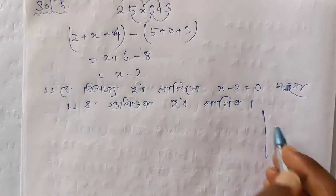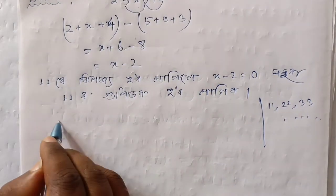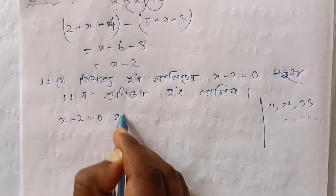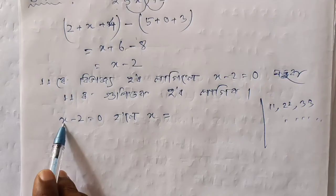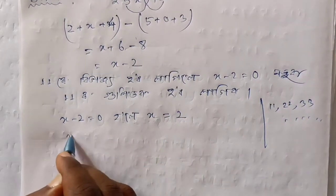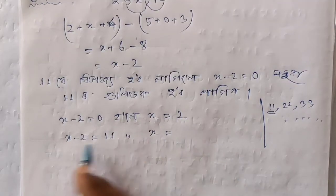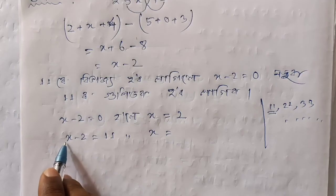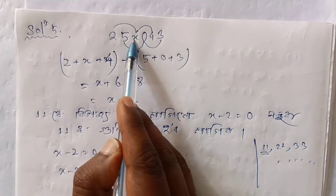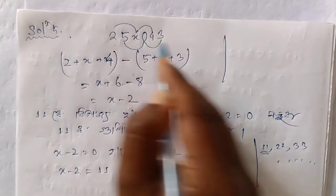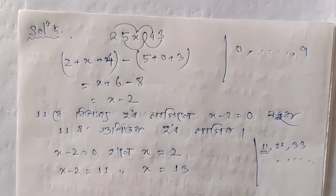It is so 11, 12, 23. X minus 2 equal to 0. X minus 2 equals 11. X minus 2 is about 10 to 13. Now, if you have these numbers, we can write 13 to 13. The number of x is equal to the number of 0 to 9. So that's 0, 1, 2, 3, 4, 5, 6, 7, 8, 9. We can write 13 to 9.